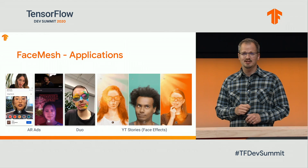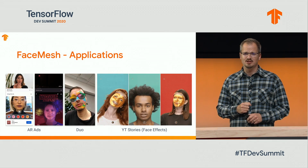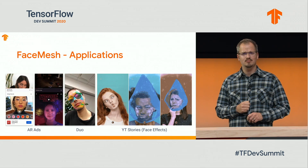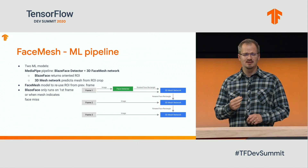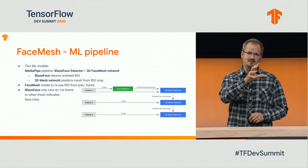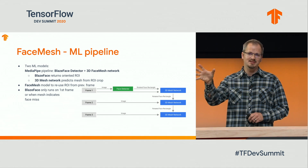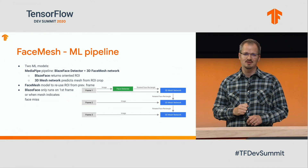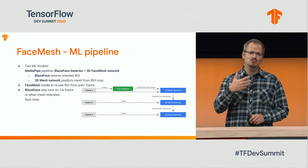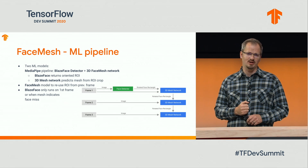Here are some of the applications: you see on the left AR ads in YouTube, then self-expression effects in Duo, and more expression effects in YouTube Stories. The face mesh is modeled as a MediaPipe pipeline consisting of a BlazeFace face detector locating where the face is. We then crop that location and run the 3D face mesh network that returns 486 landmarks. The nice thing about coupling it as a pipeline is that we don't need to run the detector on every frame — we can reuse the location computed in the previous frame, only running BlazeFace on the first frame or when there is a tracking error.